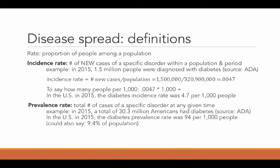We often talk about rates in terms of being out of 1,000. So what we can say is that 4.7 out of 1,000 people were newly diagnosed with diabetes in the US in 2015. The diabetes incidence rate was 4.7 per 1,000 people. The important thing about the incidence rate is that it counts only the number of new cases of a disorder or disease.